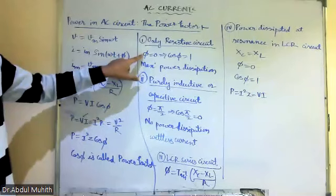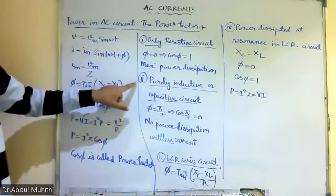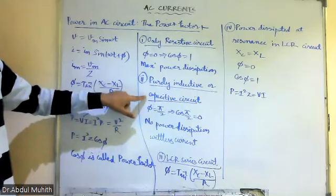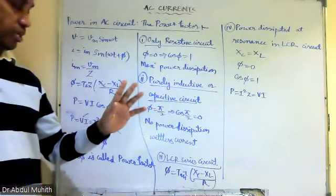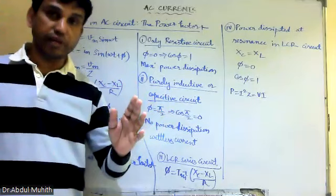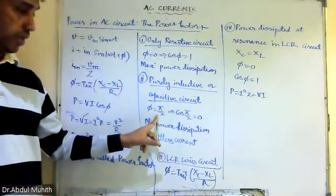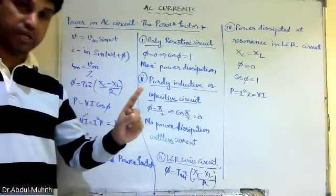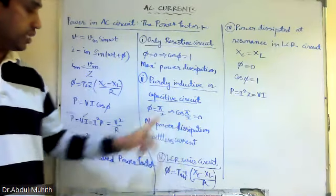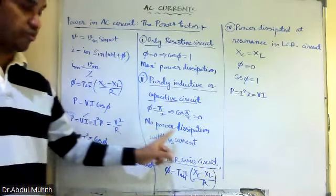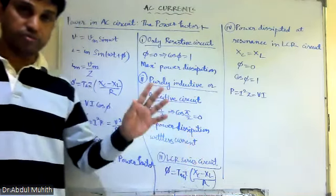For a purely resistive circuit, φ = 0, so cos φ = 1 — this gives maximum power dissipation. For a purely inductive or purely capacitive circuit, the current and voltage are 90 degrees apart, so φ = 90°, and cos 90° = 0. Multiplying by zero gives zero power dissipation. This concept is known as wattless current.